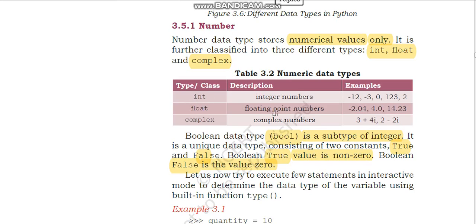Floating point contains decimal points — minus 2.04, 4.0, 14.23. If you are using any price, price generally has floating points like 0.75 or 0.50, or your marks can also be a floating point. While using these kinds of numbers you can use the data type float. Complex numbers are like 3 plus 4i, where there are imaginary and real numbers — if you use this kind in calculations, you can use the data type complex.